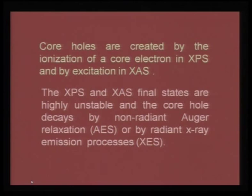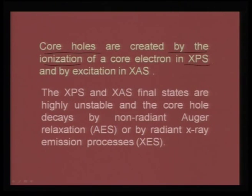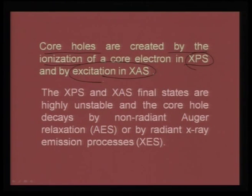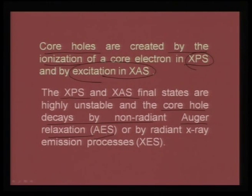To draw a parallel between XAS and XPS, I want to make some comments. Core holes are created when a core electron is knocked out by ionization, and that forms the basis for X-ray photoelectron spectroscopy. Core holes are also formed by excitation of an electron, which forms the basis for X-ray absorption spectroscopy. In both cases, XPS and XAS, we can say that the final states are highly unstable and the core hole decays by a non-radiative process - either Auger relaxation, which ends up in Auger electron spectroscopy, or by a radiative X-ray emission process, which is called X-ray emission spectroscopy.